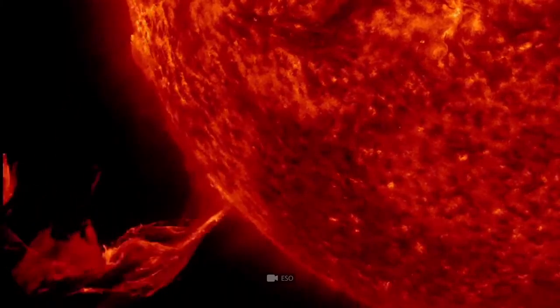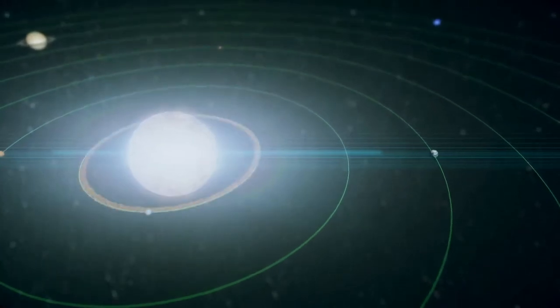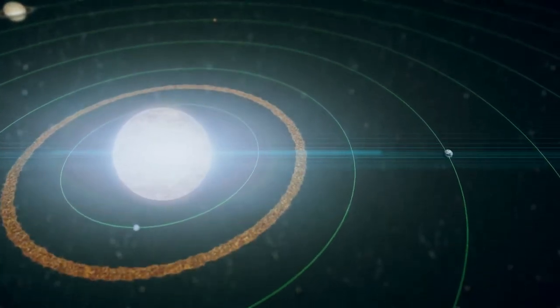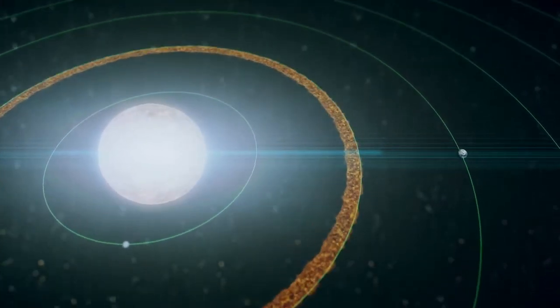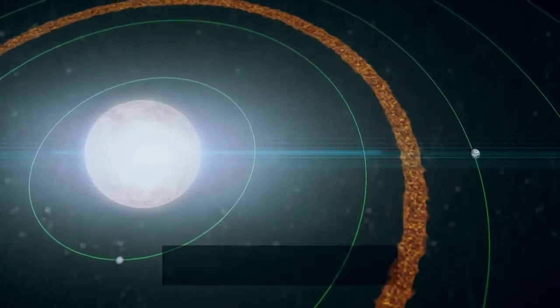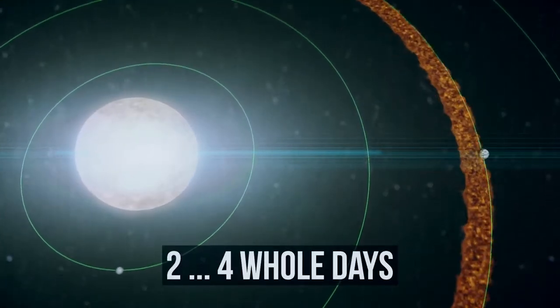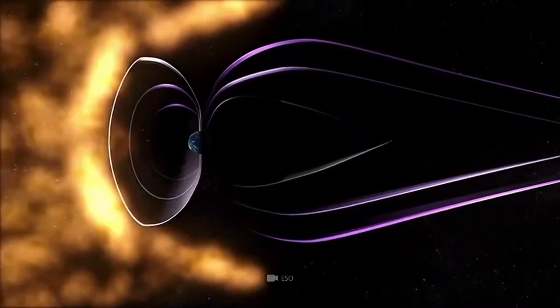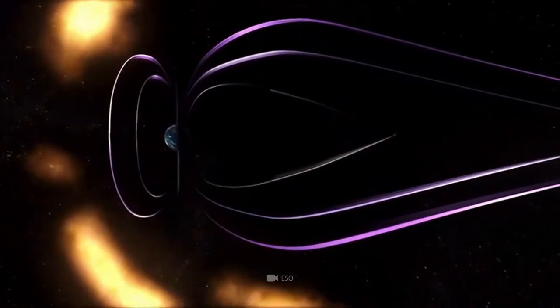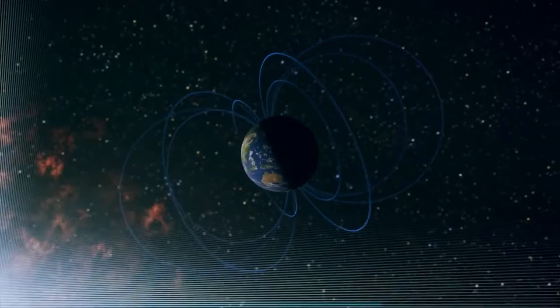During normal solar activity, their ejection moves towards the Earth in the form of a large number of charged particles. They reach the Earth within two to four whole days, and most of them, fortunately, keep the Earth's magnetic field in the upper atmosphere.